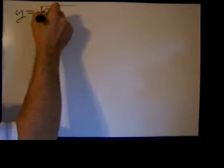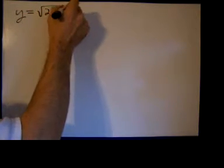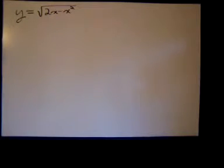Morning. We're going to take a derivative of the function y equals the square root of 2x minus x squared. This is a composition of functions, so we have to use the chain rule.